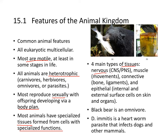There are four types of tissues: nervous tissue, including the central nervous system and peripheral nervous system; muscle tissues for movement; connective tissue for bones, ligaments, and things; and epithelial tissues, which are the internal and external surface cells on the skin and organs. Shown here, a black bear is eating a trout or salmon, and here is D. immitis, a heartworm parasite that infects dogs and other mammals.